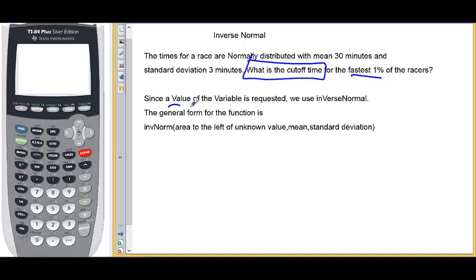Since a value of the variable is requested, we use the inverse normal. The general form for this function needs to know three things: the total area to the left of the unknown value under the bell curve, the mean, and the standard deviation.